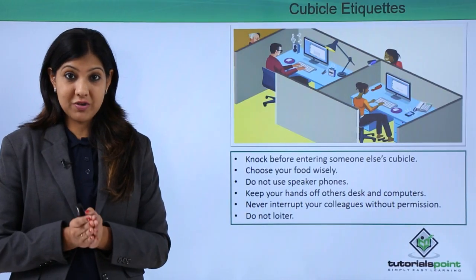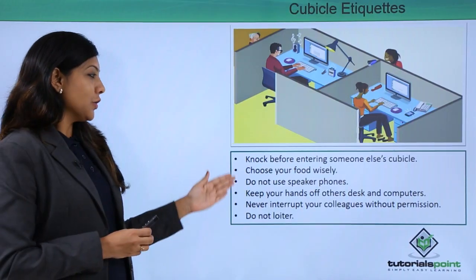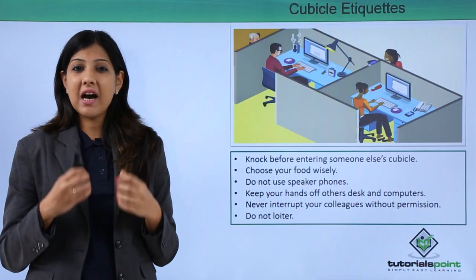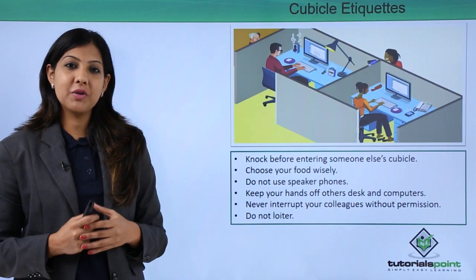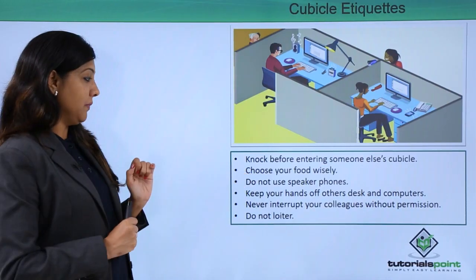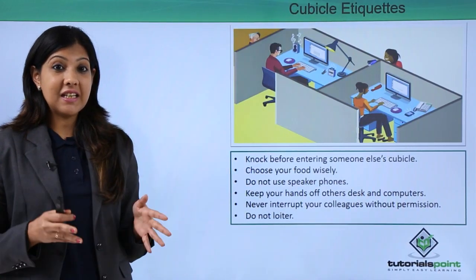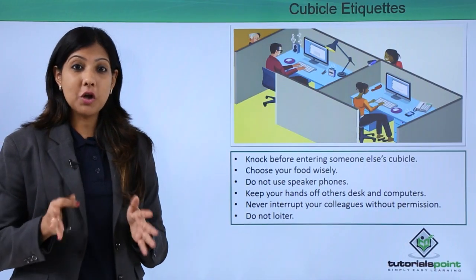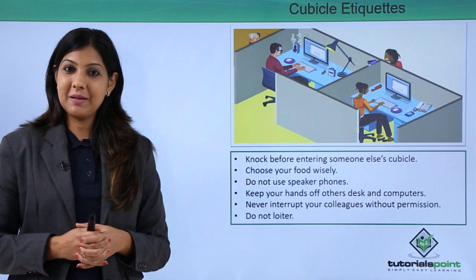Certain cubicle etiquette one should keep in mind: knock before entering somebody else's cubicle — do not just barge in. Choose your food wisely; if you are eating in an open workstation area, avoid food with strong smells like onions, garlic, and pickles, as smells spread fast. Do not use speakerphones, as you could be disturbing your neighbor. Keep your hands off others' desks and computers. Never interrupt your colleagues without permission — first check that they are free to talk.